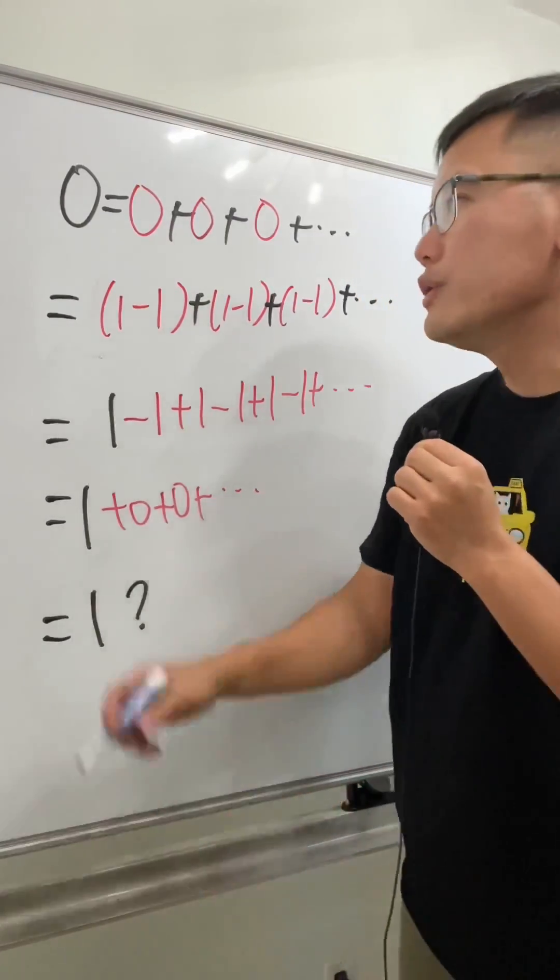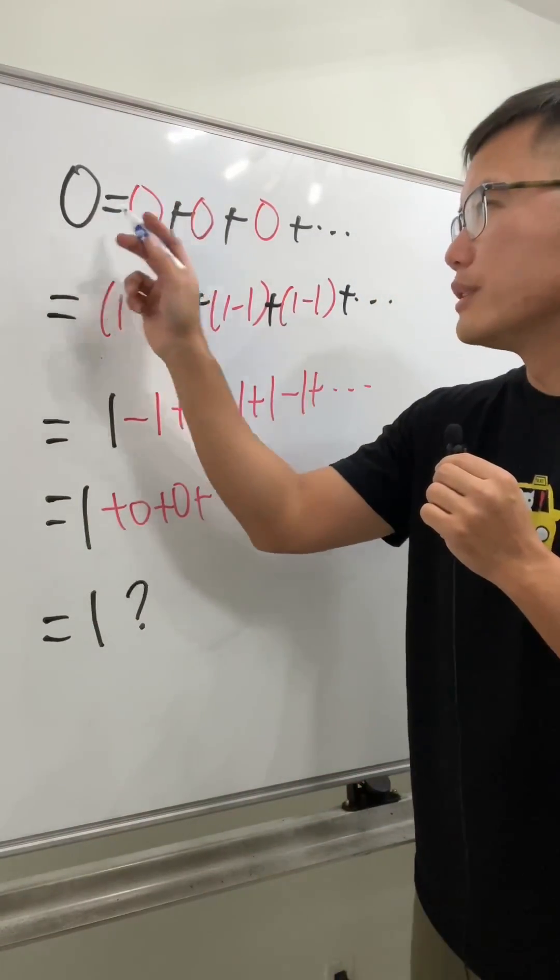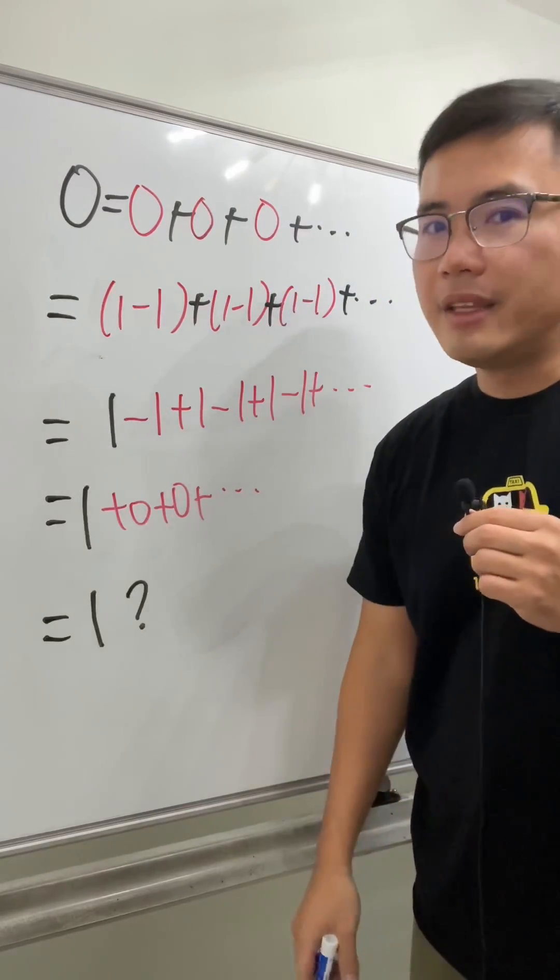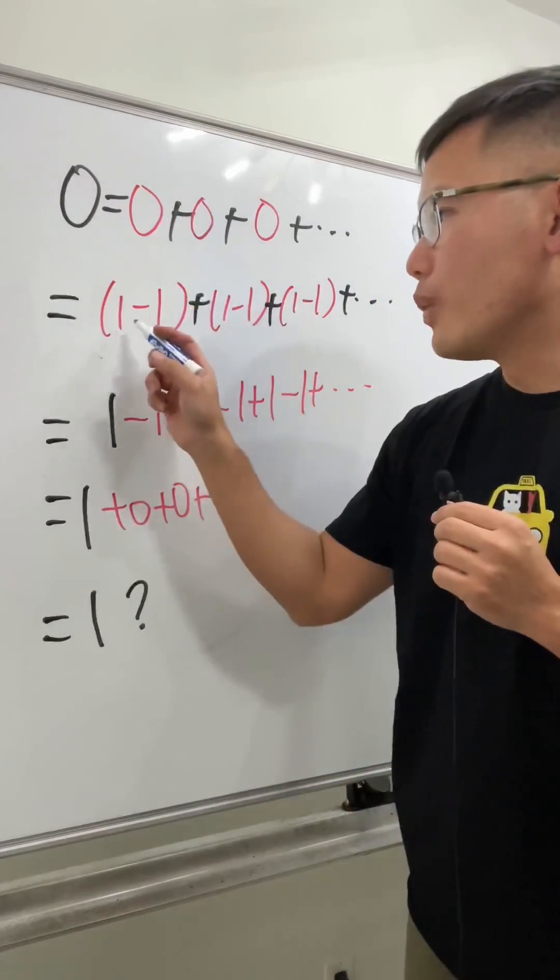Now let's see what's going on here. Originally you have zero, and we're saying that zero is equal to zero plus zero plus zero plus infinitely many zeros. And then, because we know zero is equal to one minus one...